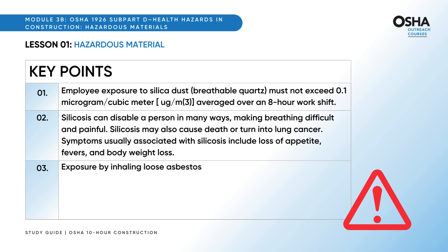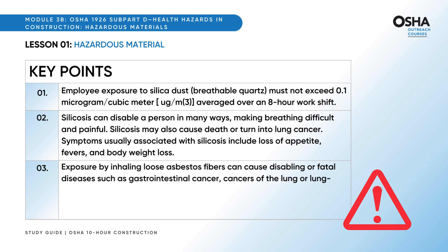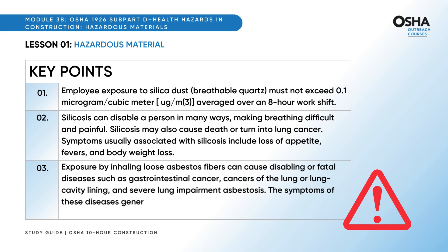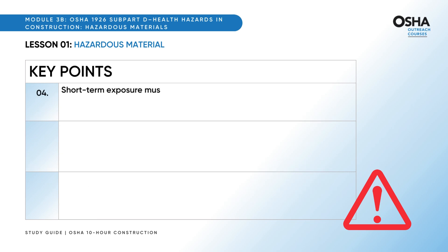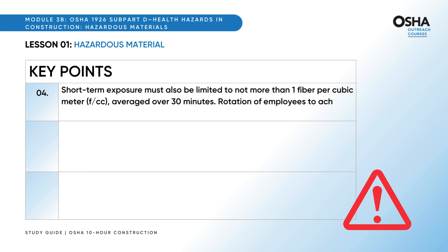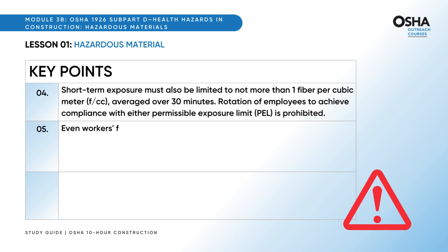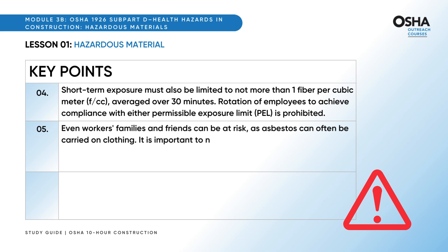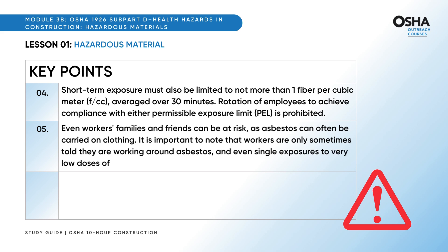Exposure by inhaling loose asbestos fibers can cause disabling or fatal diseases such as gastrointestinal cancer, cancers of the lung or lung cavity lining, and severe lung impairment known as asbestosis. The symptoms of these diseases generally do not appear for 20 or more years after initial exposure. Short-term exposure must also be limited to not more than one fiber per cubic meter, averaged over 30 minutes. Rotation of employees to achieve compliance with either permissible exposure limit (PEL) is prohibited. Even workers' families and friends can be at risk, as asbestos can often be carried on clothing. Workers are not always told they are working around asbestos, and even single exposures to very low doses of fibers can result in harm.